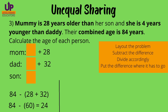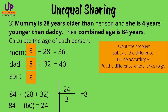In the previous examples we only subtracted one difference. In this case, two people have an extra portion, so we had to combine them first and then subtract — that's the only difference. Next, we divide accordingly. We divide 24 by three because we have three persons: mom, dad, and the son. 24 divided by 3 gives us 8. So each box now has 8. However, mommy has an extra 28 years and daddy has an additional 32 years, so the son is 8 years old, daddy is 40, and mommy is 36.